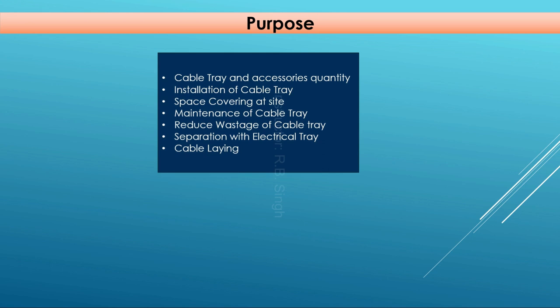You might wonder: if we are preparing a 3D model, can't we understand bends, expanders, and ups and downs of the cable tray easily there? Yes, but construction and installation cannot be done using a 3D model, because at site you can only take plain paper — you cannot take a laptop or systems everywhere in the plant. The best way for construction and installation of tray is based on 2D dimensional drawings, so we need to prepare detailed 2D drawings that any site engineer can use to install the cable tray.